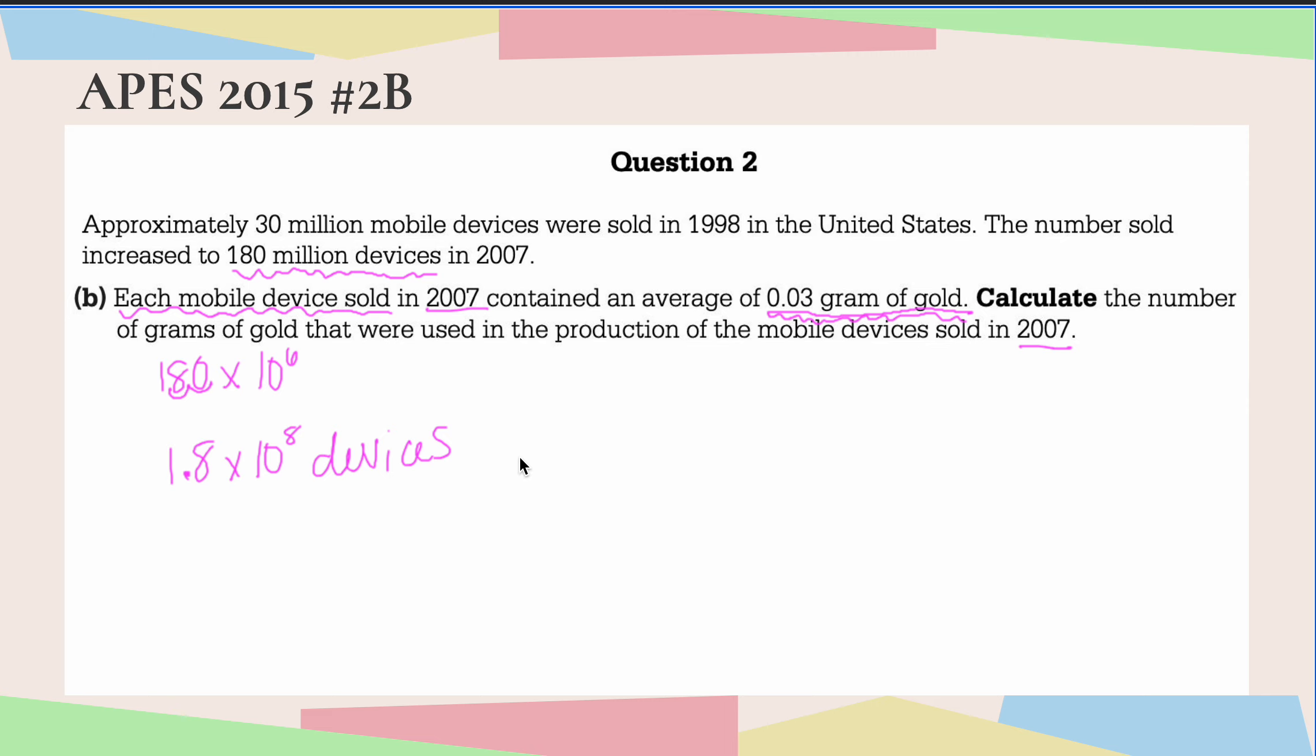Now I'm going to do the same thing here. I'm going to take my 0.03 grams and move my decimal place two to the right. So that's going to become 3 times 10 to the negative 2 grams of gold.